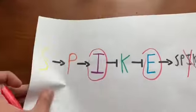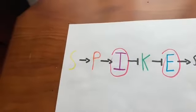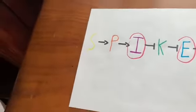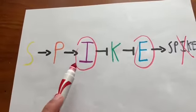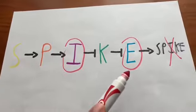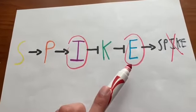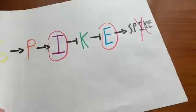How about I and E are mutant. S activates P, P activates mutant I, I cannot repress K, K will repress E, but since E is mutated, no spikes are made.